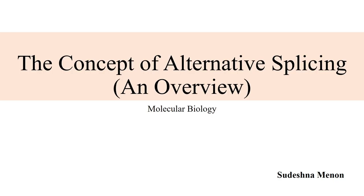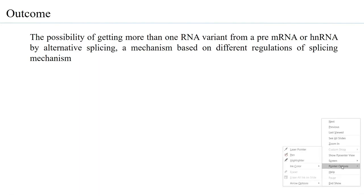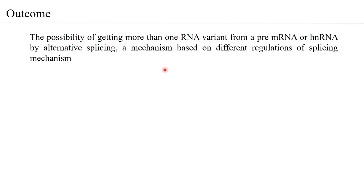Let us look at the learning outcomes of this interesting concept. The possibility of getting more than one RNA variant from a pre-mRNA or an hnRNA is called alternative splicing, which is a mechanism based on different regulations involving the splicing mechanism.